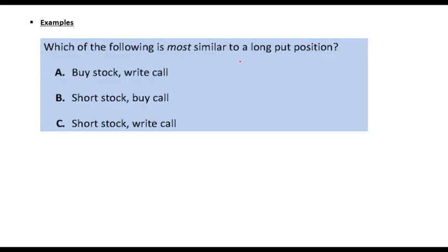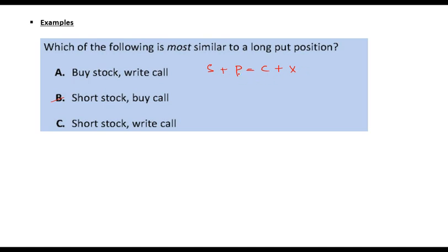Which of the following is more similar to a long put position? The equation is S + P = C + bond, where the bond has face value equal to strike price. To isolate put option: put option equals C + X minus S. So buy a call and short stock. Short stock, buy call — B should be the answer.